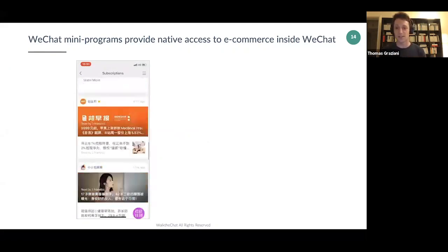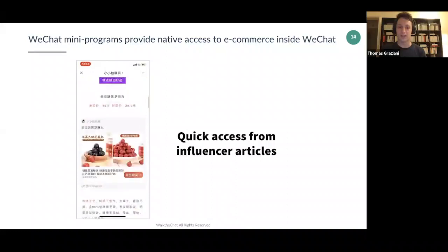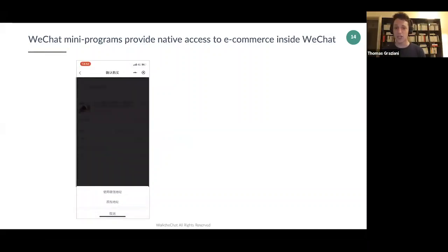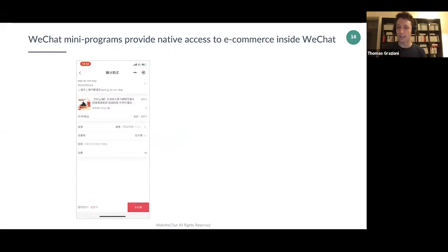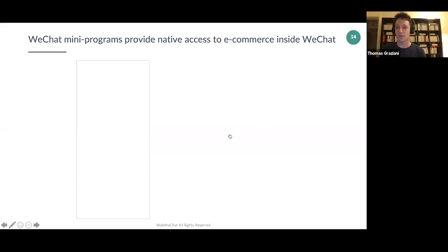An interesting feature is the deep integration with influencer campaigns. Here you have an influencer post where you can click directly on a product and get straight to the e-commerce experience — one click to checkout. The user's address is already in WeChat, so it's just one click to payment. That's the power of mini programs: taking users from an influencer article directly into e-commerce in just three or four clicks from discovery to checkout, which is exceptional.